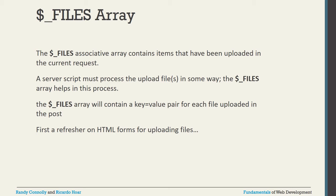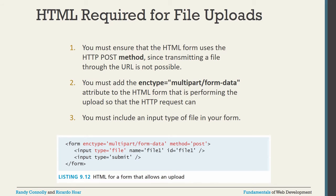The $_FILES array will contain a key-value pair for each file uploaded in the POST request. When uploading a file using HTML, we have to keep a few points in mind. First, you must use the POST method — not GET. Along with the form tag, when writing the form action and method attributes, we also need to add enctype equal to multipart/form-data.